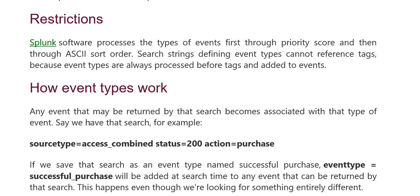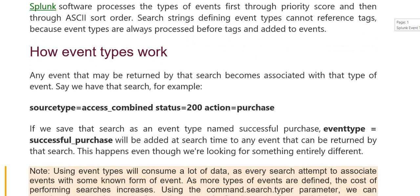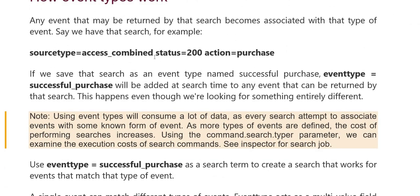How event types work: any event may be returned which has been associated with that type of event. For example, we can search source type access combined with status 200 and action equal to purchase. We can save that search as an event type named 'successful purchase', so that event type is equal to successful purchase.